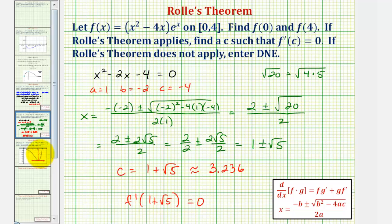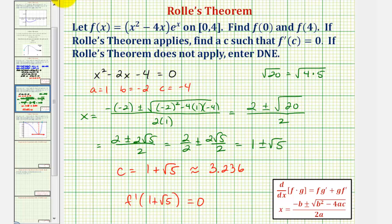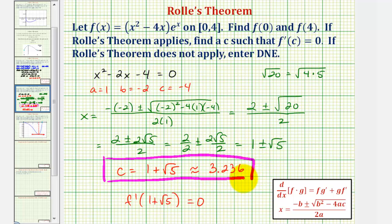Going back to our graph, this is the x value — our value of c — where the derivative equals zero, or where we have a horizontal tangent line to the function at that x value. So our answer is c equals one plus square root of five. We shouldn't round unless the directions tell us to. I hope you found this helpful.